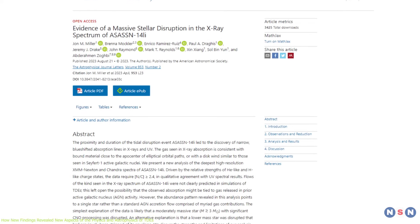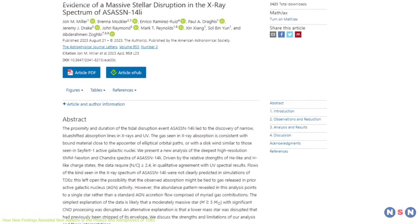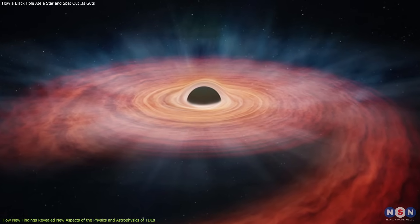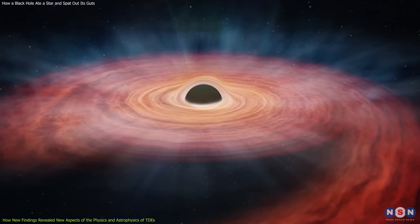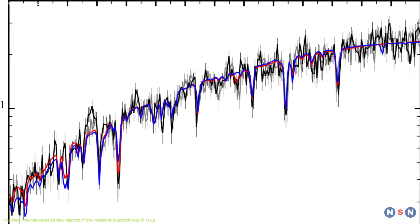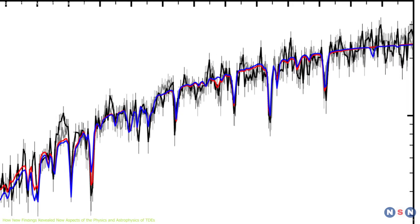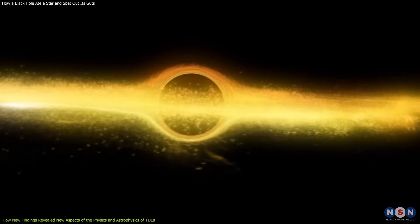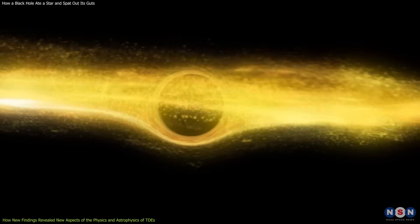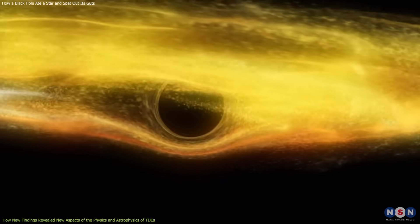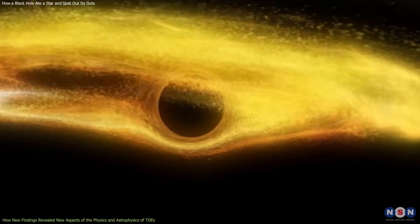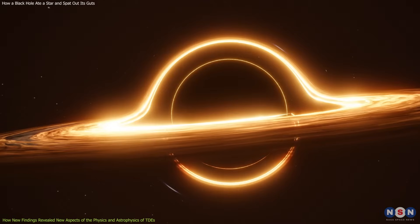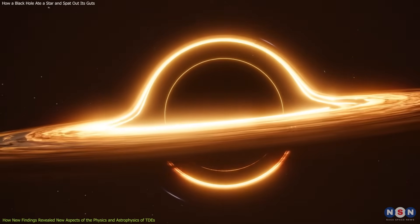Recently, astronomers reported some new and exciting findings about ASASN-14Li, which show that this event is still an active and rich source of information for studying black holes and their surroundings. A study by John Miller used high-resolution X-ray spectroscopy to measure the spin of the black hole that destroyed the star. They found that the black hole has a spin parameter of 0.7, which means that it rotates at about 70% of the maximum possible speed for a black hole of its mass. This is one of the first direct measurements of black hole spin using TDEs, and it could help us understand how black holes grow and evolve over time.